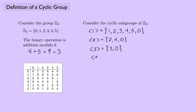How about the subgroup generated by the element 4? I'll start with 4. 4 plus 4 is 8, but 8 mod 6 is 2. And 2 plus 4 is 6, but 6 mod 6 is 0, so I'm back where I started.